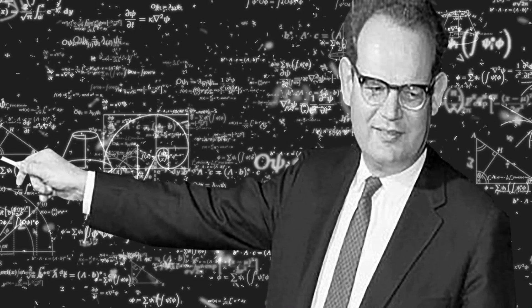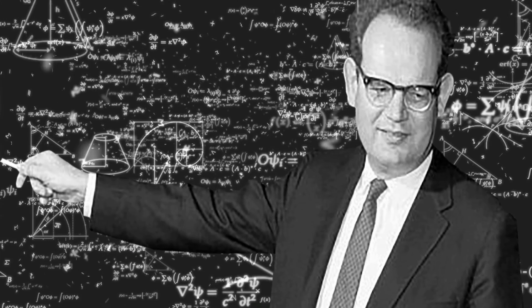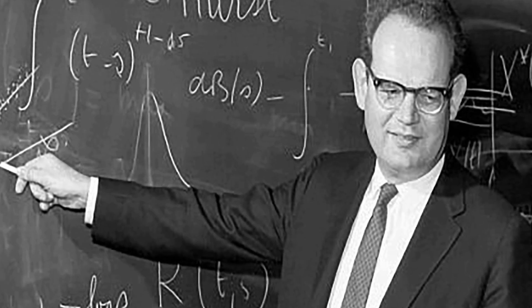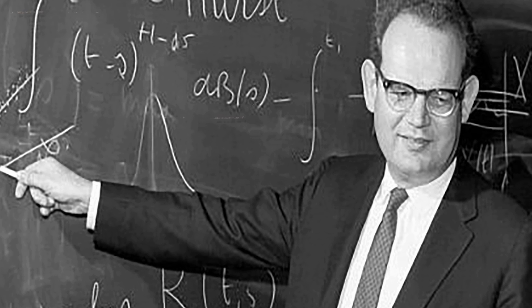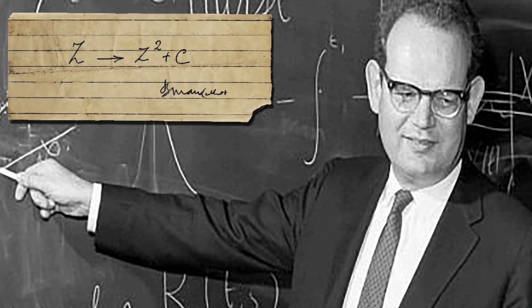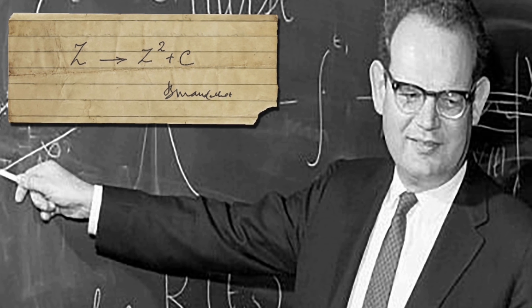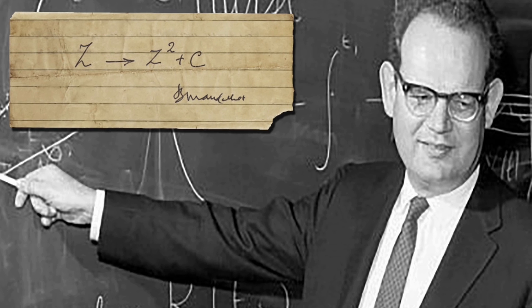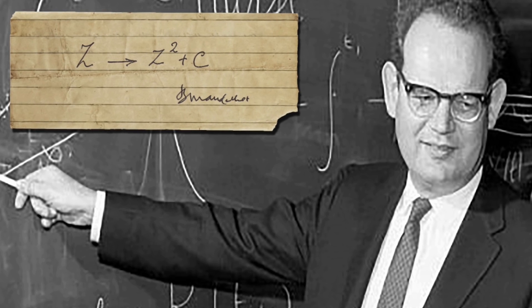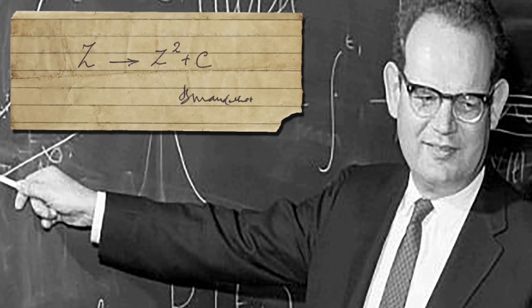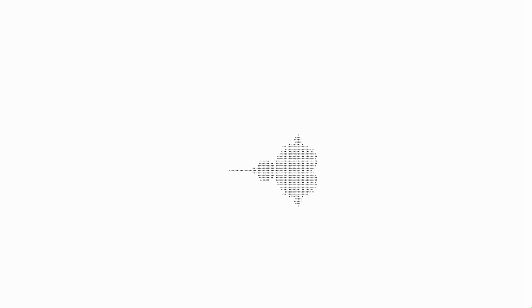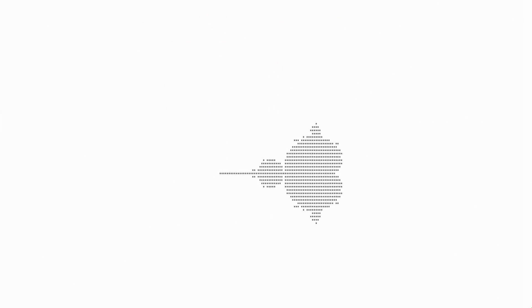In 1980, the mathematician Benoit Mandelbrot publicized a simple formula: Z maps to Z squared plus C. But you don't apply it only once — you take the result and feed it back into the formula. Do this often enough and a pattern emerges: the Mandelbrot set.